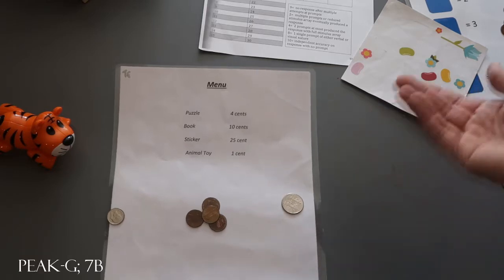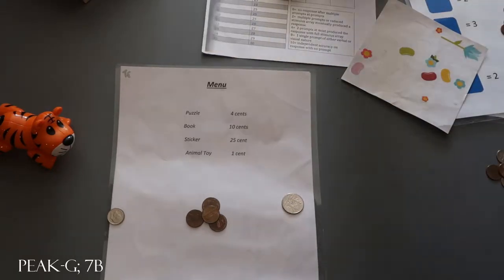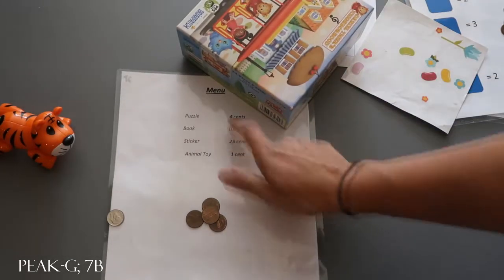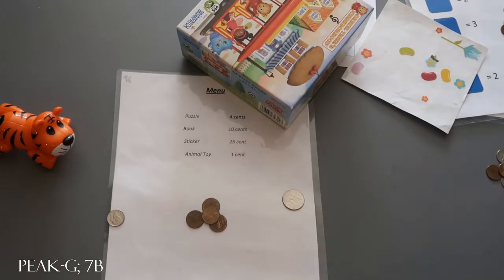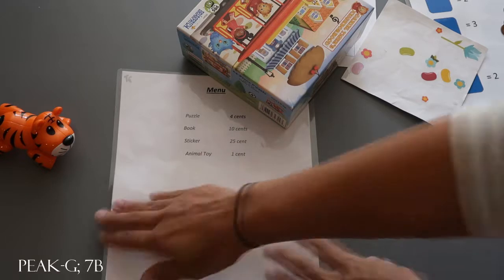So then if they're doing, let's say the puzzle is 4 cents and we're like okay, it's time to buy the puzzle, it costs 4 cents, then they would have this to pick from and hopefully they would pick the 4 cent amount.